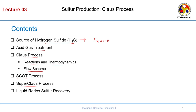SCOT stands for Shell Claus Off-gas Treating process. The super-Claus process is an improvement on the standard sulphur process. Whatever sulphur we actually reduce in the Claus process, the remaining amount is recovered through these two processes — the SCOT process and the super-Claus process. Another process, although smaller in scale, is the liquid redox sulphur recovery process. We will see each one by one.